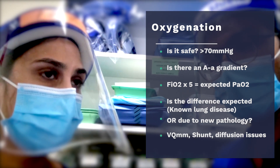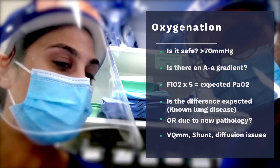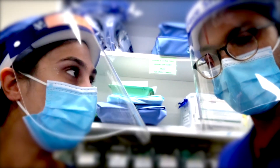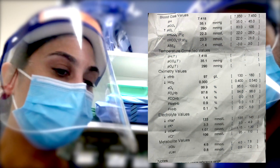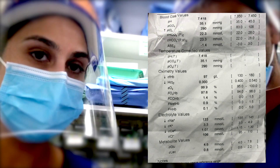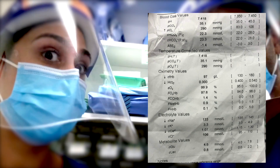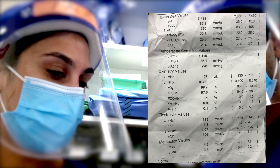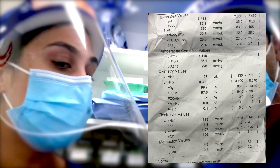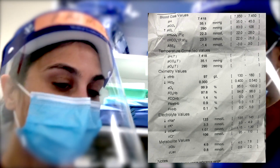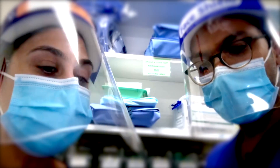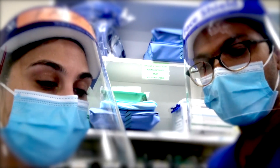You also want to know if this is the oxygen you'd expect for the FiO2 the patient is on — essentially looking at the AA gradient. The rule of thumb is three to five times the FiO2 is what you should expect. So if the patient is on 50%, you'd expect a PaO2 of 250 or above. This patient at 290 actually shows great oxygenation with no significant AA gradient.